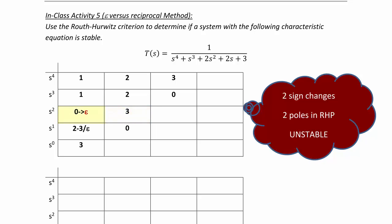So because we have a zero, we would replace that with epsilon. So that would then make c1 equal to two minus three over epsilon, and zero. And d1 is three. And we would have two sign changes, one between s2 and s1 row, and one between s1 and s0 row. So those two sign changes mean there are two poles in the right half plane, and we have an unstable system.